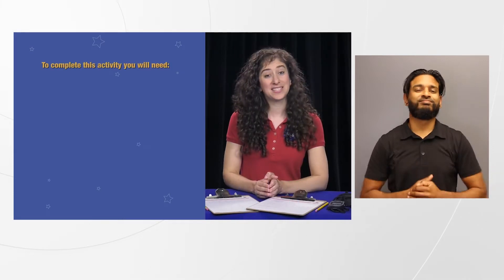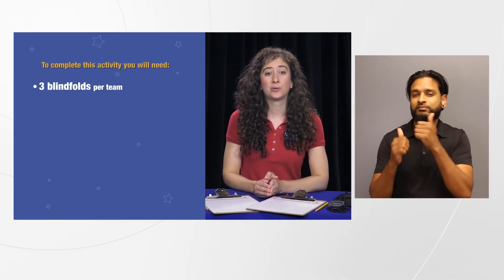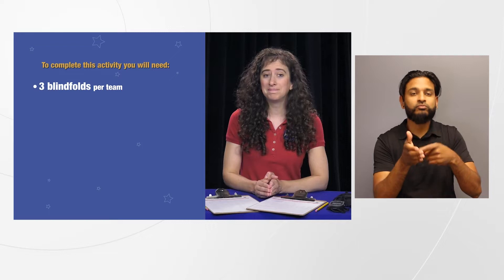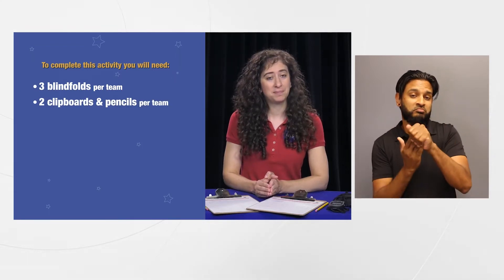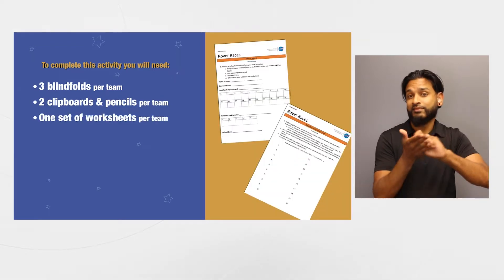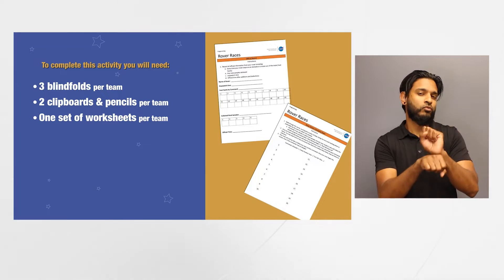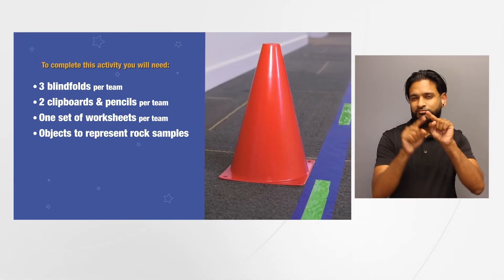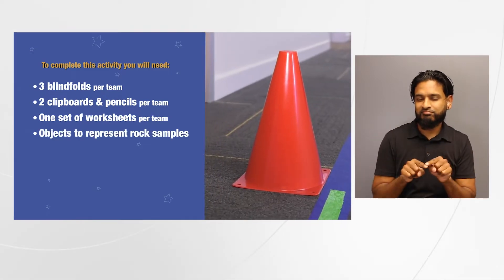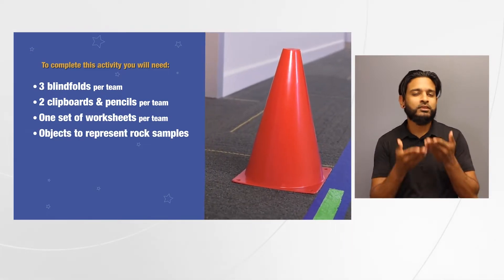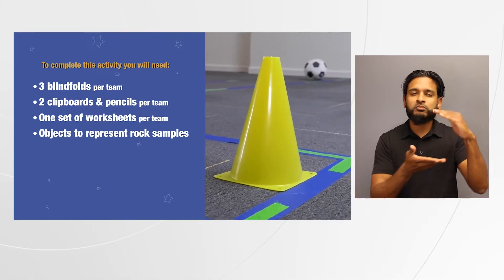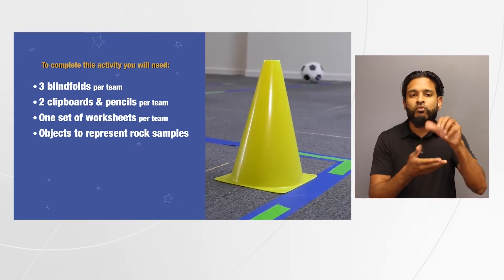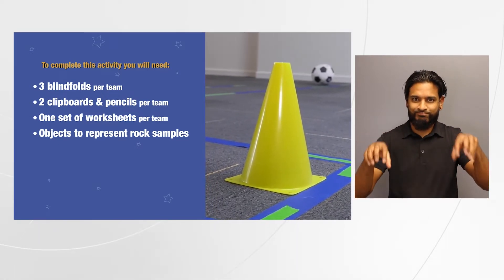To complete this activity, you will need three blindfolds per team, two clipboards and pencils per team, one set of worksheets per team, and objects to represent rock samples. Small traffic cones, or objects that won't roll away when the rover tries to pick them up, work well.